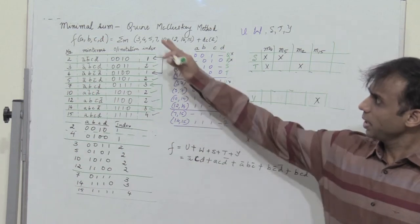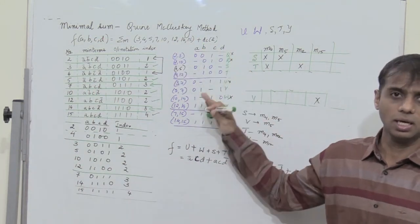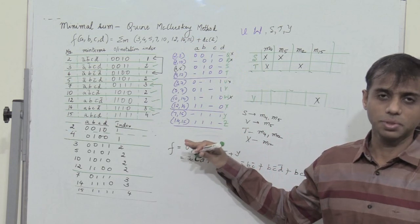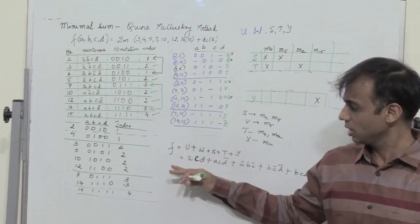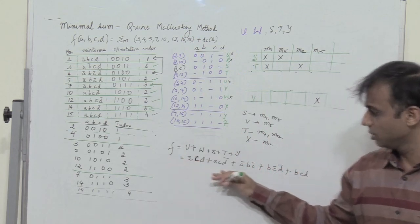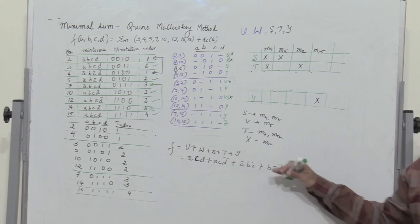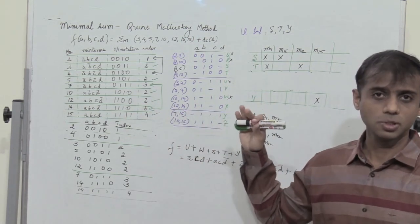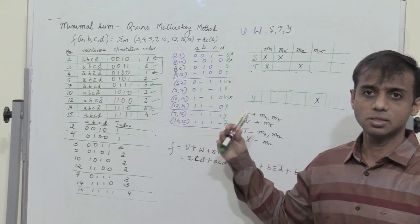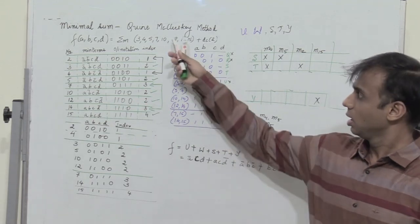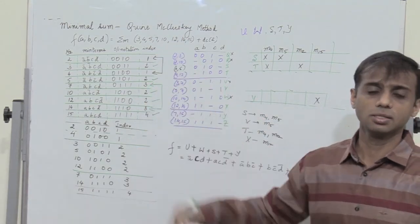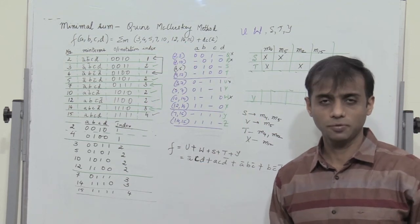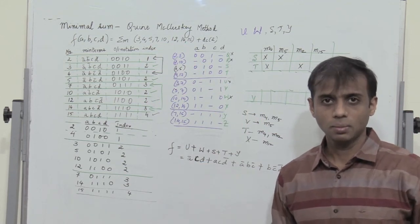When comparing the QM method with the K-map to find the minimal sum, the QM method is pretty lengthy and takes more time because a number of steps are involved. Make sure you practice the same method by taking different examples. I hope you found the video informative — please like, share, and subscribe and press the bell icon to get notifications on further uploads.